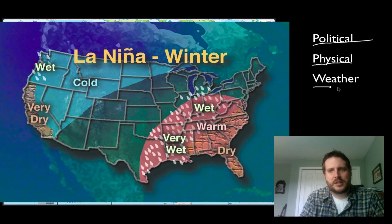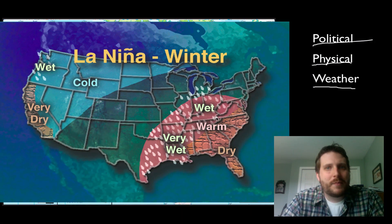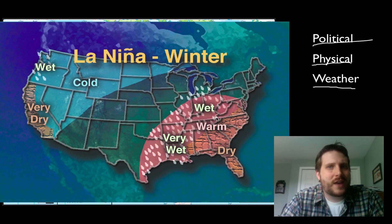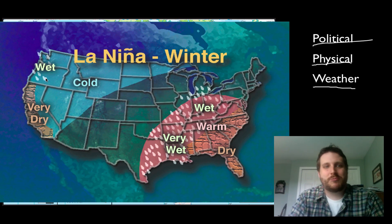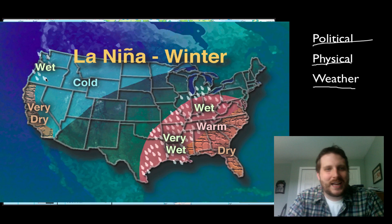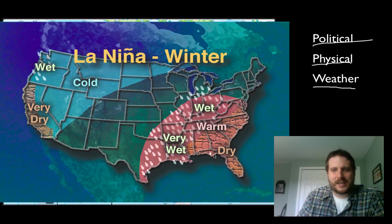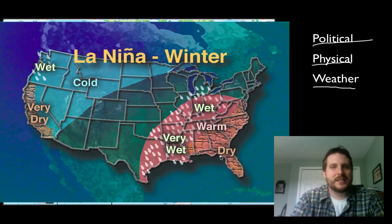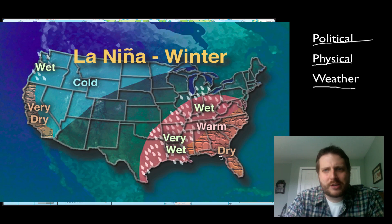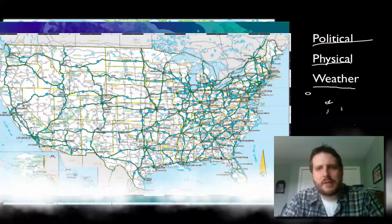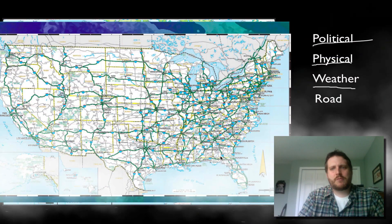Another type of map you're probably familiar with are weather maps, especially if you watch the news at night. This map shows us that Oregon is of course wet and Florida is dry, and this is because of La Niña this year.